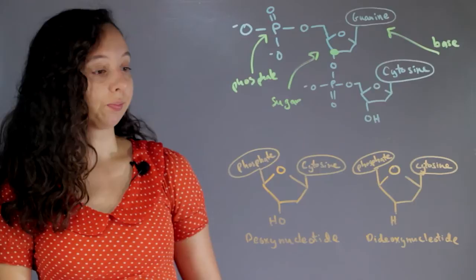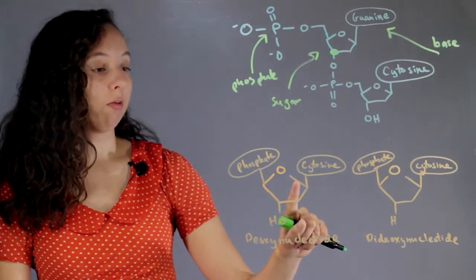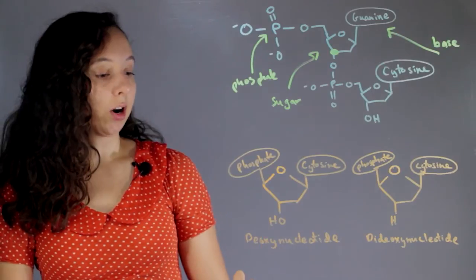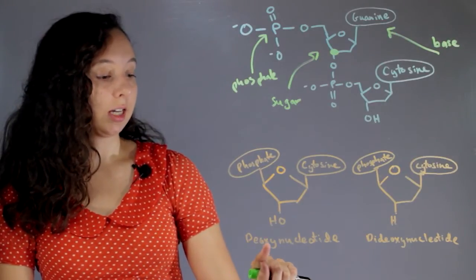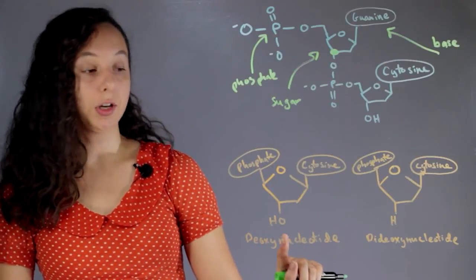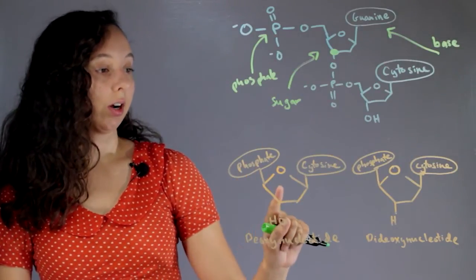What they do is take regular bases or regular units and monomers. This is what we call a deoxynucleotide. This is regular, what's in both you and me: phosphate, sugar, base.